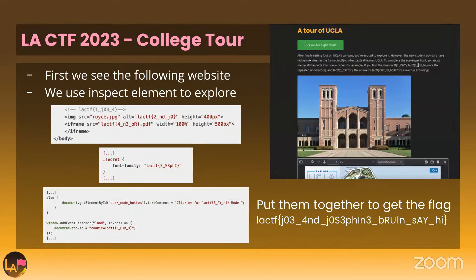I'll also do some quick walkthroughs of challenges from last year's LACTF 2023. Starting with one of the easier web challenges called College Tour. You click on the link and see the website. You use inspect element to explore all the code that makes up the website. You'll find six different parts of the flag within the HTML, CSS, or JavaScript files. If you put them all together, you get the flag — easy as that.